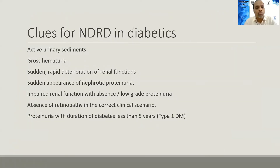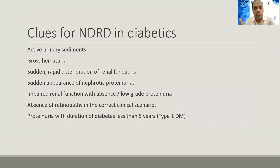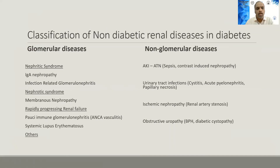Other clues for non-diabetic renal disease include: active urine sediments with significant microscopic hematuria or pyuria, gross hematuria, sudden rapid deterioration of renal function, sudden appearance of nephrotic proteinuria in a patient without previous proteinuria, impaired renal function with low-grade or absent proteinuria, absence of retinopathy in the correct clinical scenario, and in type 1 diabetics with less than five years of diabetes duration who present with proteinuria.